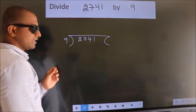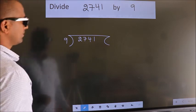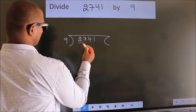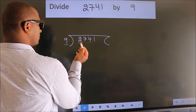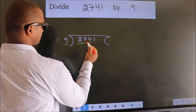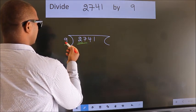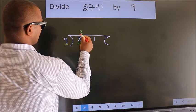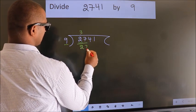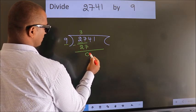This is your step 1. Next, here we have 2. Here 9. 2 is smaller than 9, so we should take 2 numbers: 27. When do we get 27? In the 9 table. 9 threes, 27. Now, we should subtract. We get 0.